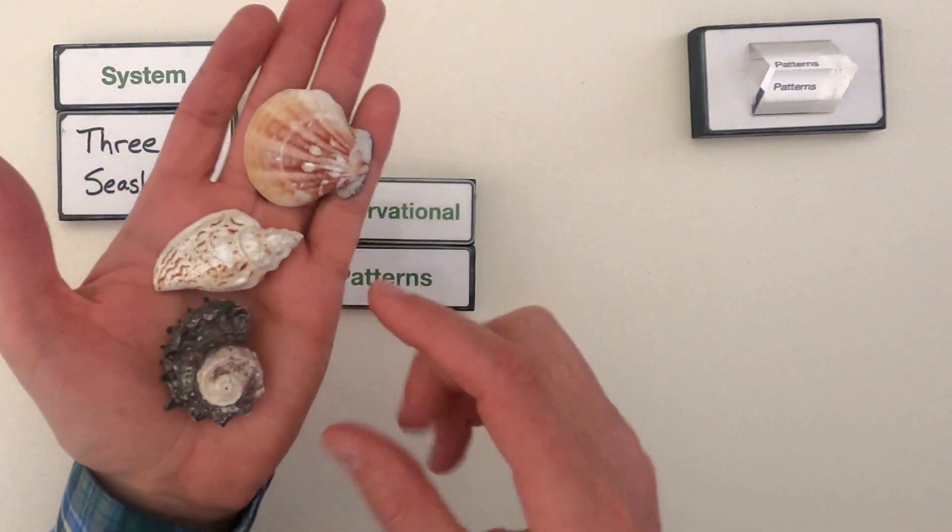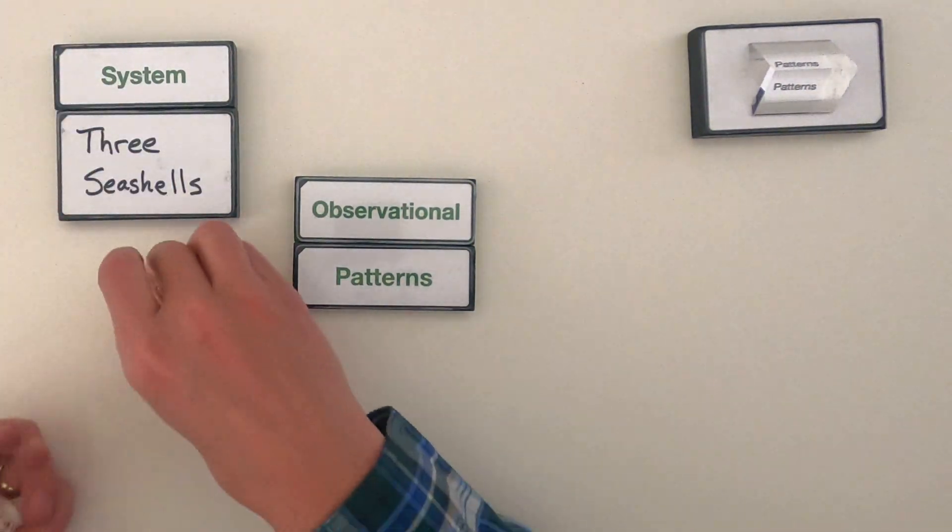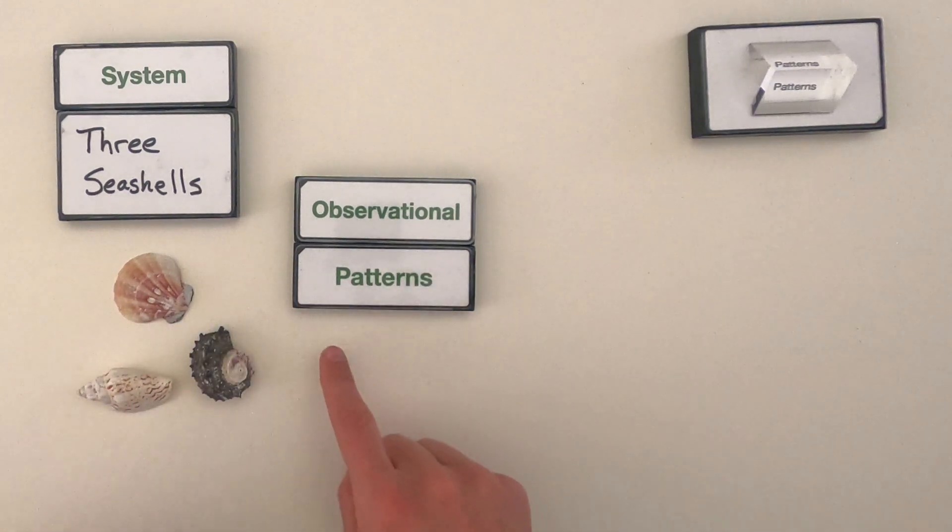What I'd like you to do is pause the video. If you want to see better videos of this, there's a Google slide deck below this video you could use. But what I want you to do is pause the video and then go through and record as many observational patterns as you can in these three seashells. And then come back and we'll compare our thinking.